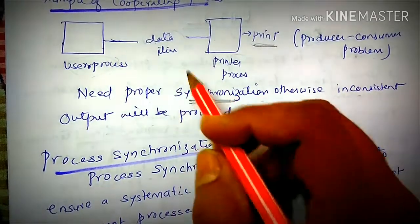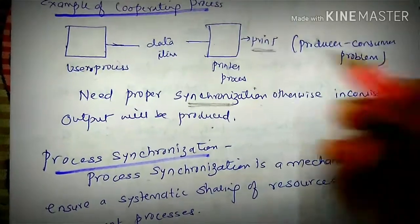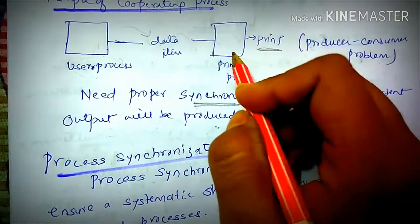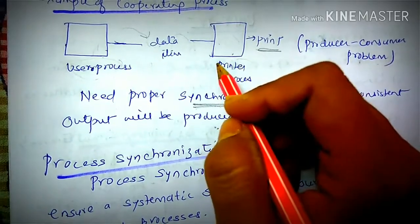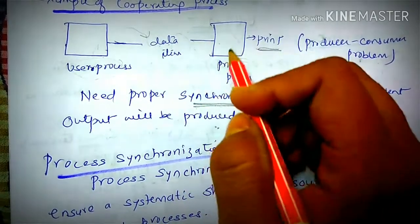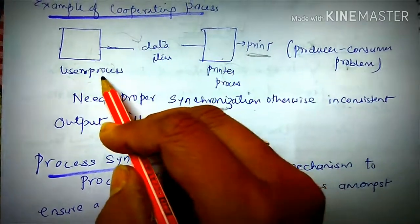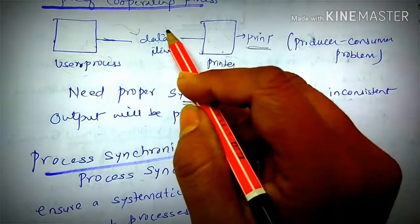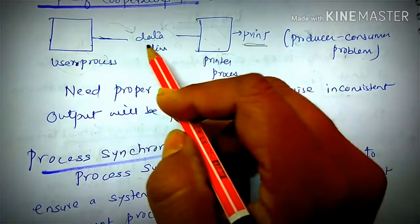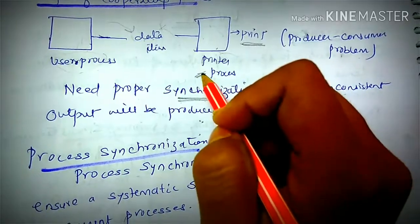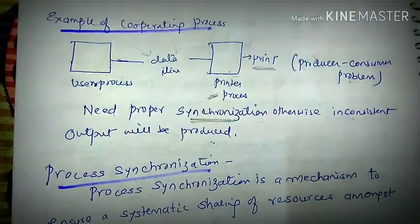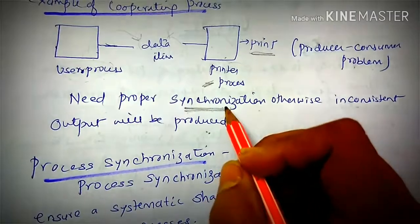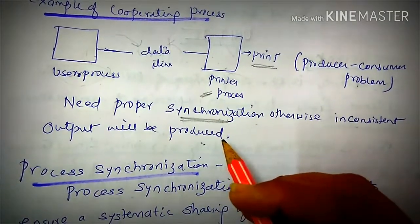Without systematic data transmission, the output will be inconsistent. For example, if the user process has produced data but the printer process is busy, the data cannot be printed until the printer is free. The user process must wait. When cooperating processes share data items, they need to follow proper synchronization to ensure consistent output.